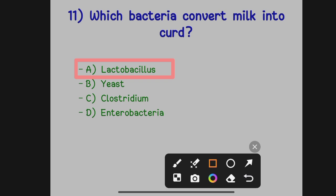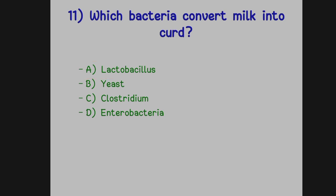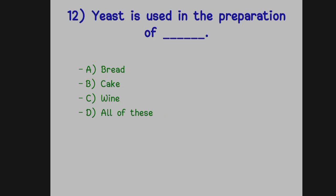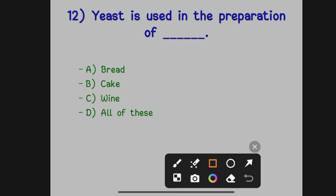The next question: yeast is used in the preparation of dash. Option A: Bread. Option B: Cake. Option C: Wine. Option D: All of these. The correct answer is Option D, all of these — in all these preparations we use yeast.